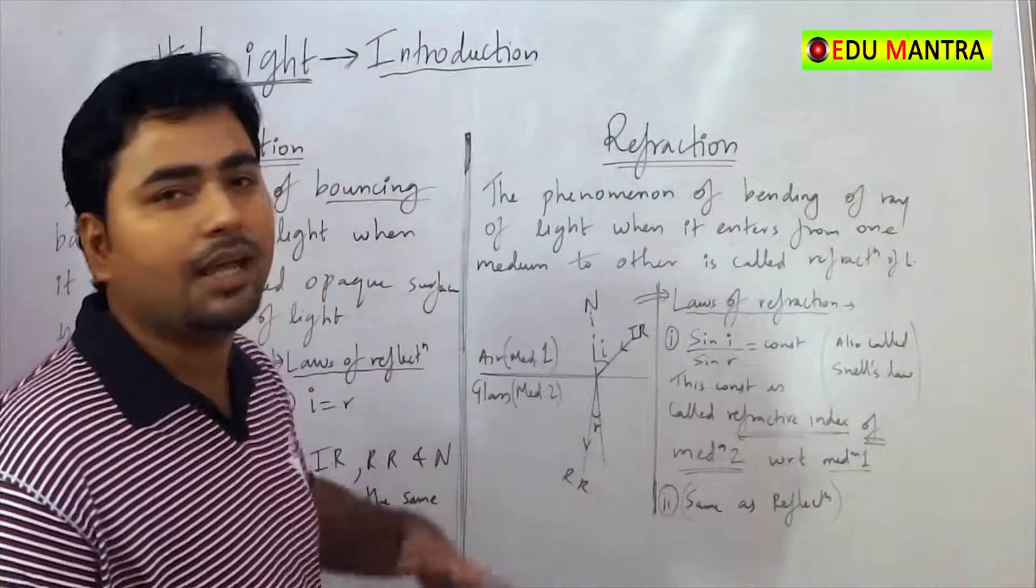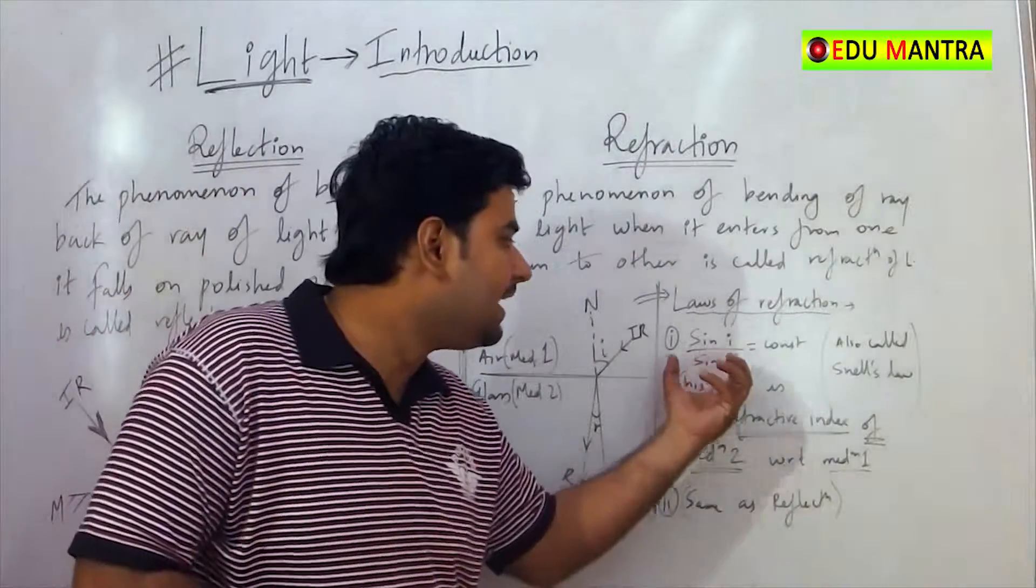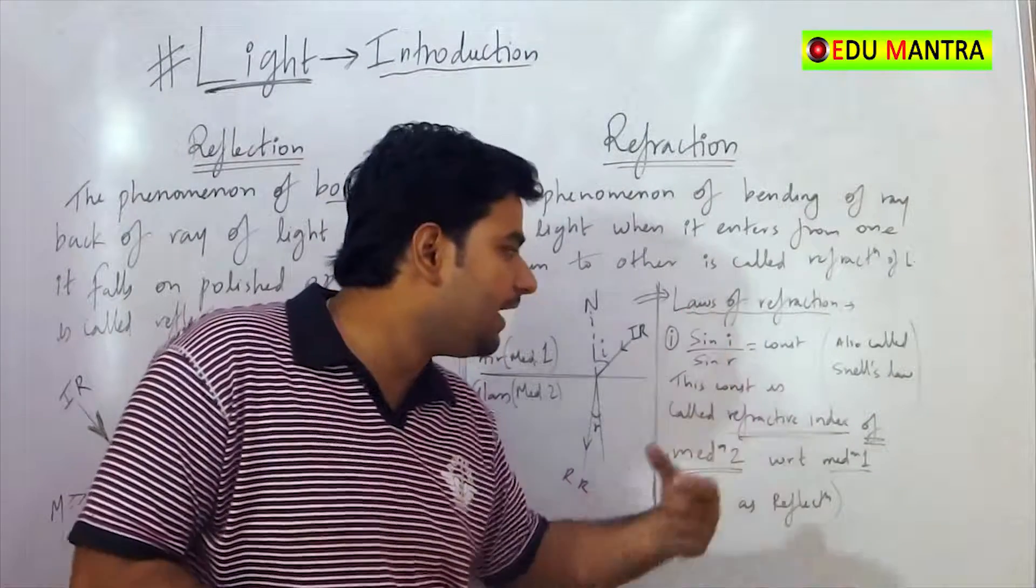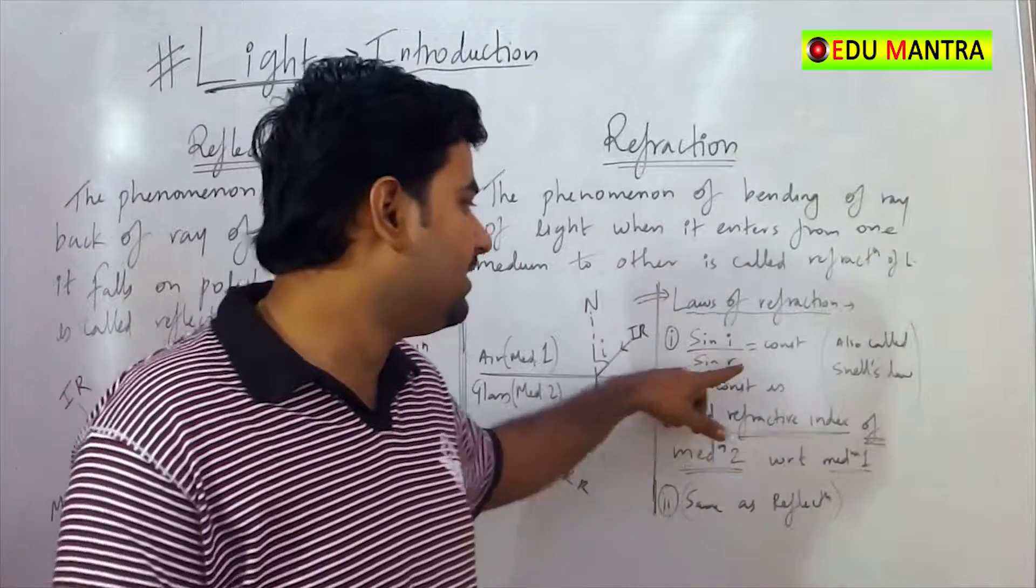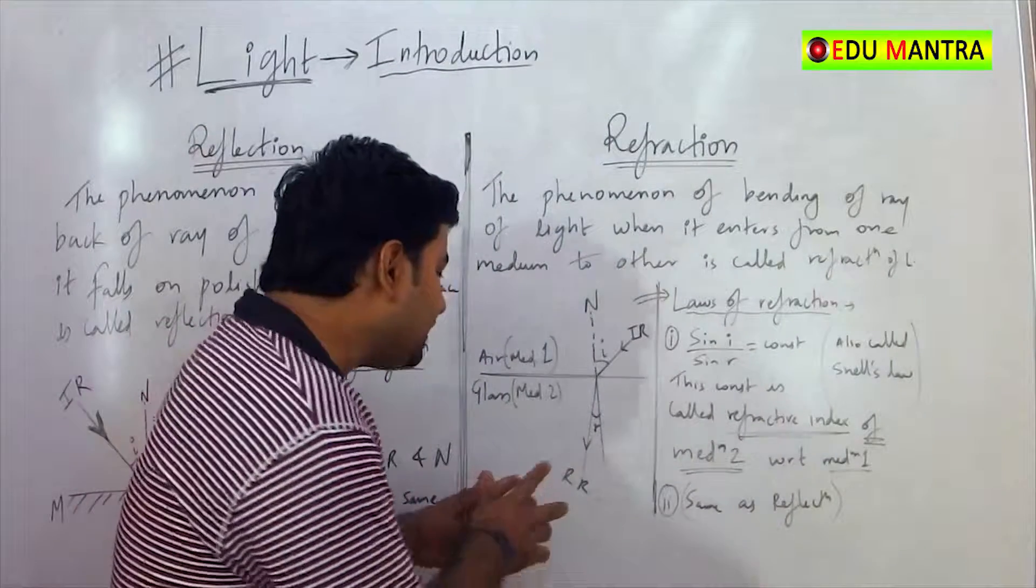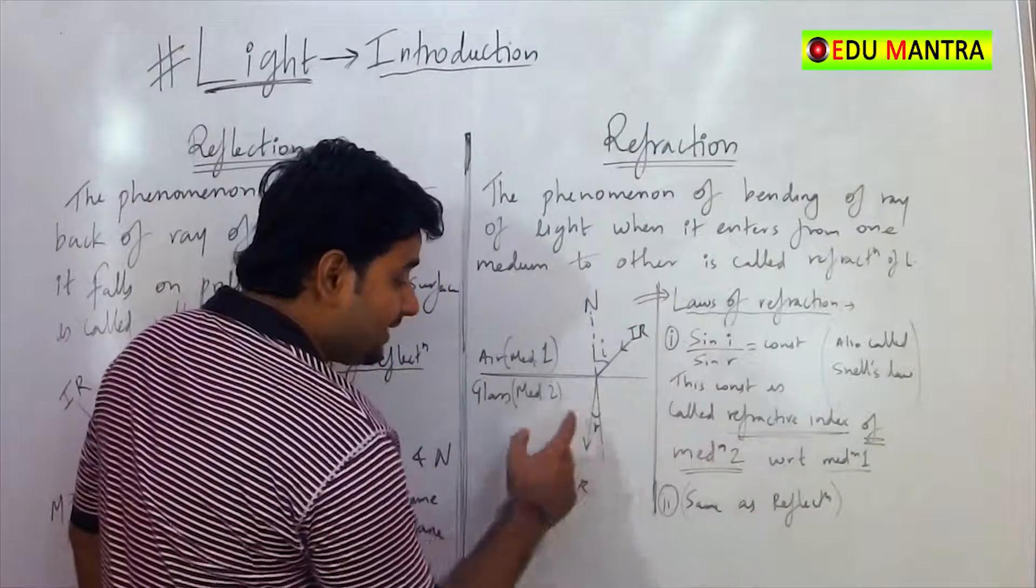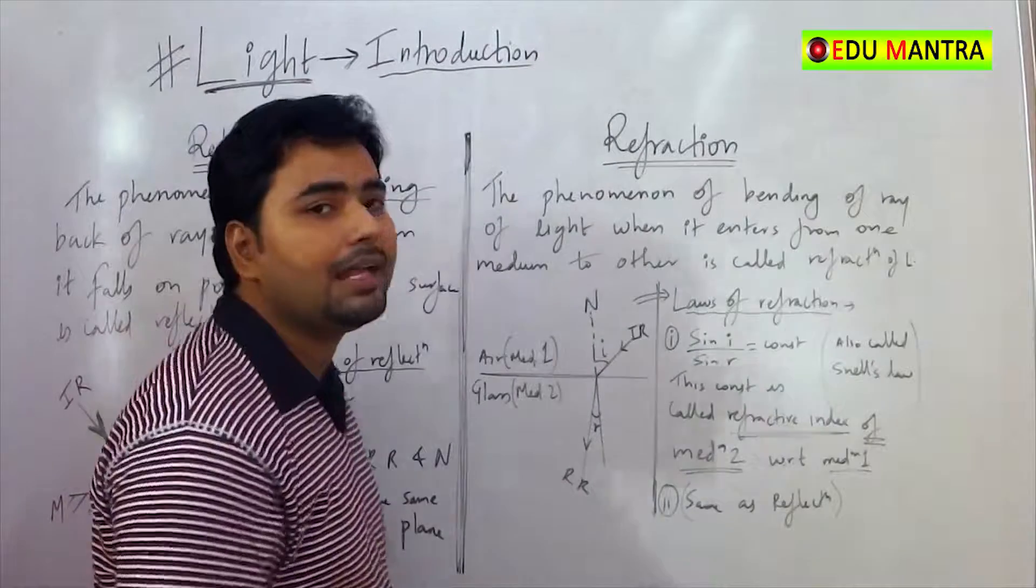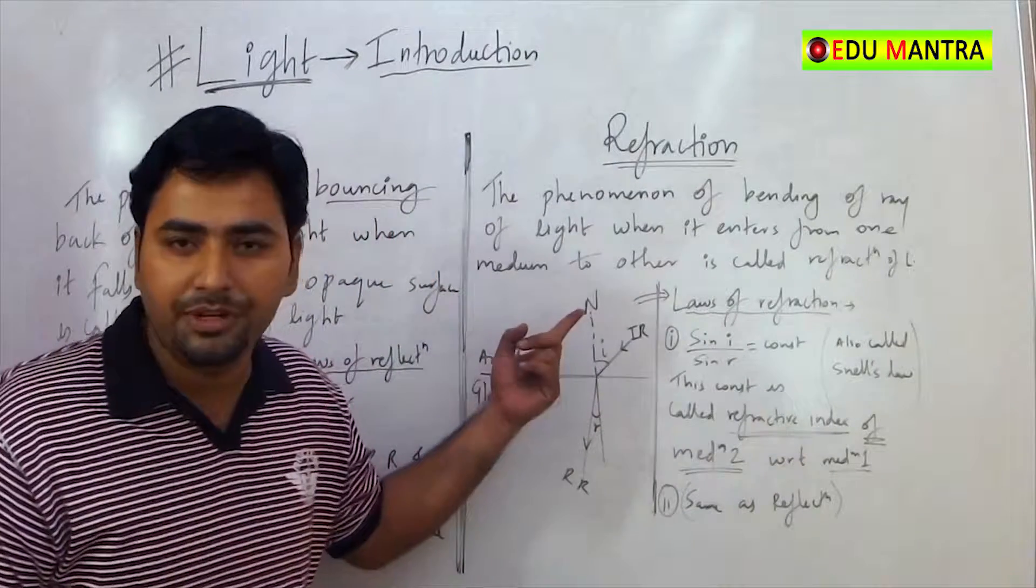If this air to glass is happening, then the sine of angle of incidence to the sine of angle of refraction is constant. And that is called refractive index of the second medium. In this case, refractive index is of glass with respect to the first medium, that is air.